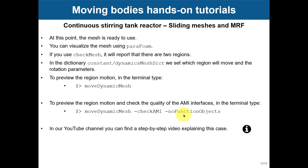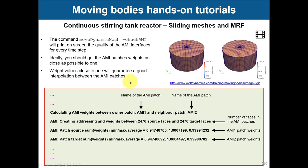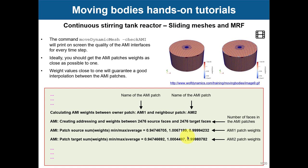You can put this case into motion using the moveDynamicMesh utility, which is great for checking sliding meshes. Run moveDynamicMesh with the appropriate option and you can check the quality of the AMI interpolation. You will see the fixed and moving patches in the output, along with interpolation weight coefficients that should be close to one.